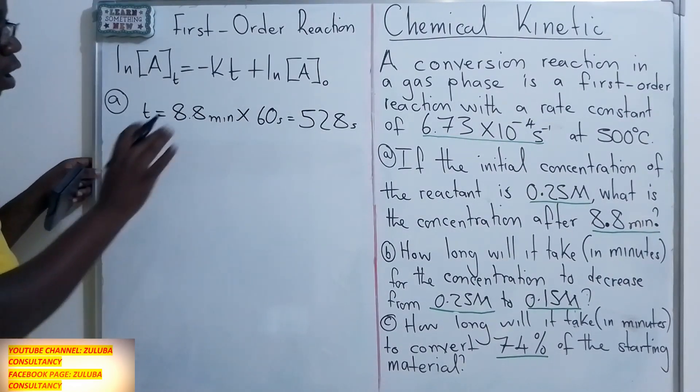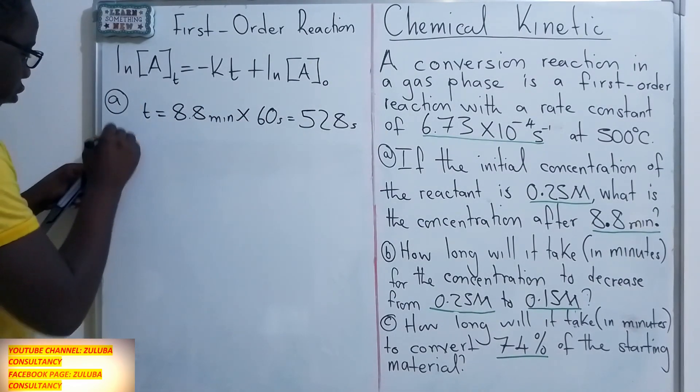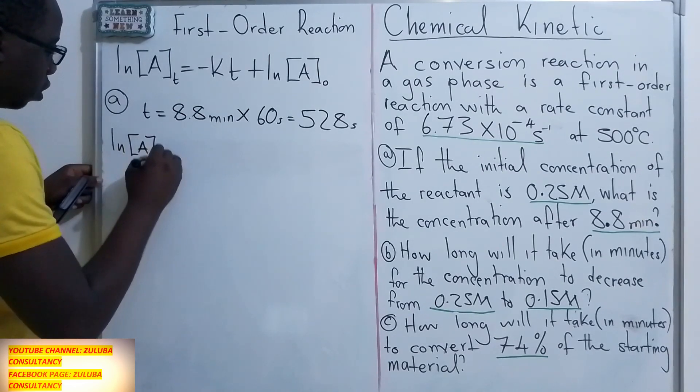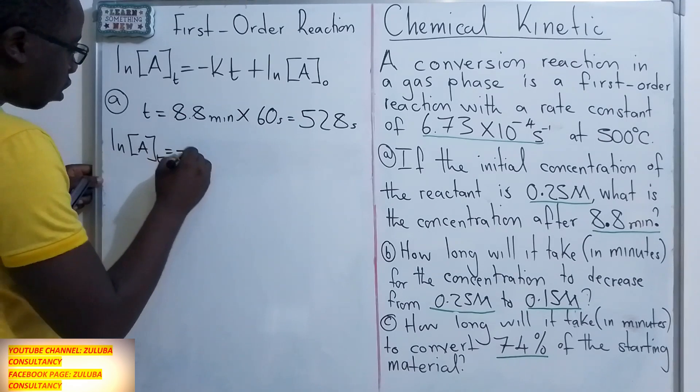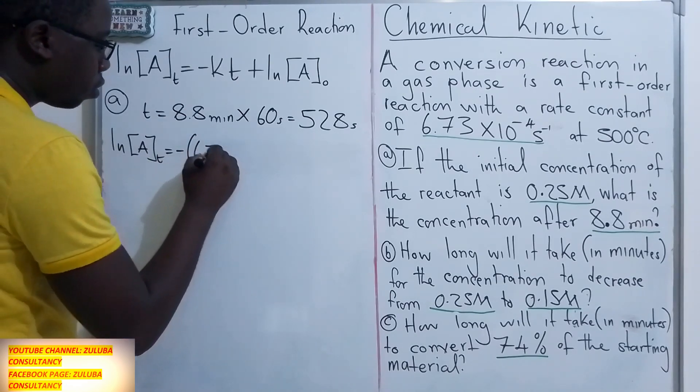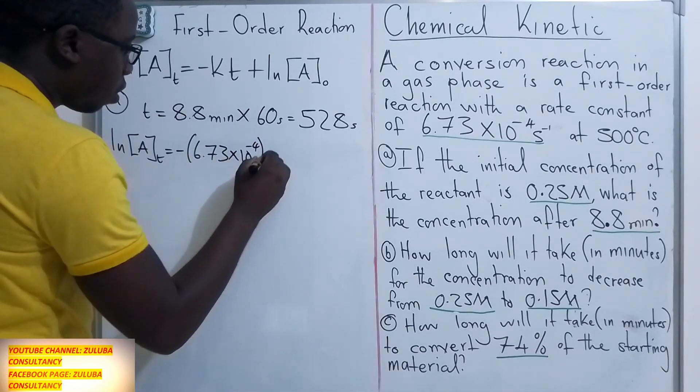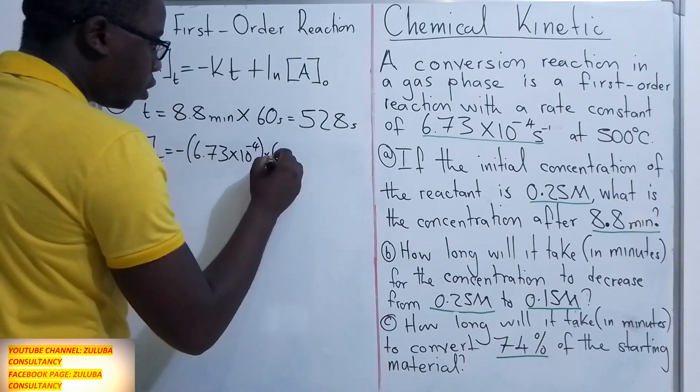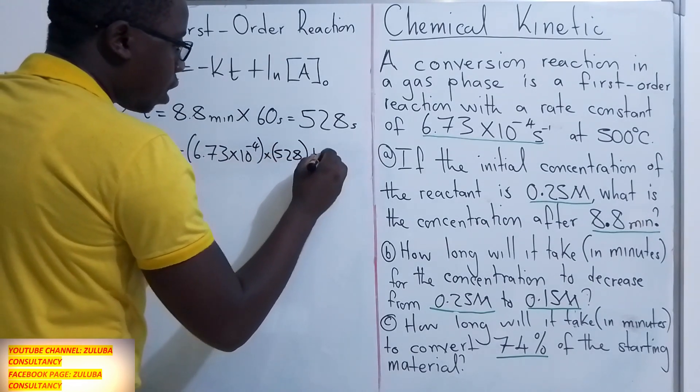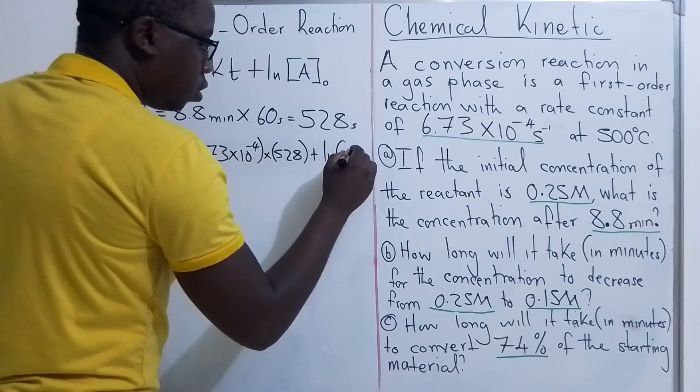Now that we have the time in seconds, we can go back to the equation where we are saying the natural log of the concentration at a given time is equal to negative of the k value, which is 6.73 × 10^-4, multiplying with the time, which is 528, then plus the natural log of 0.25.